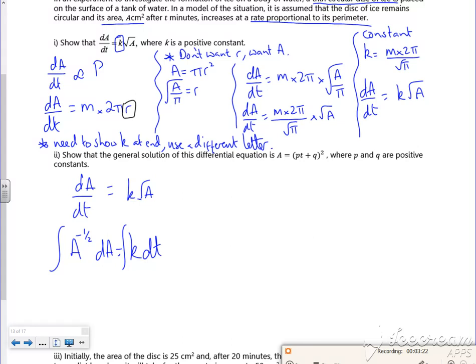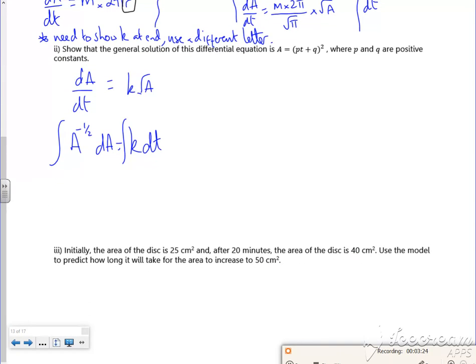And I'm integrating both of those there. So if I integrate it, I get A to the half over half, which is 2, is equal to Kt plus C.